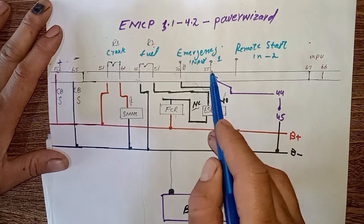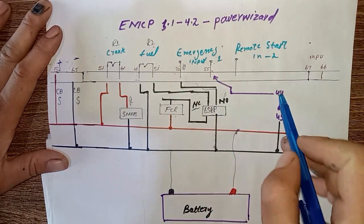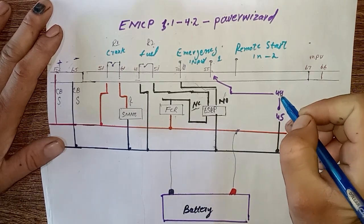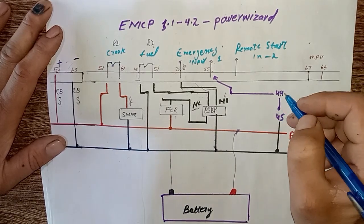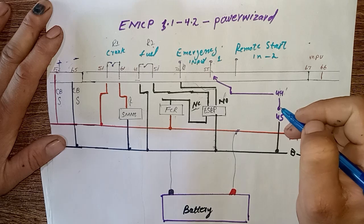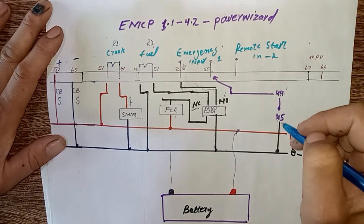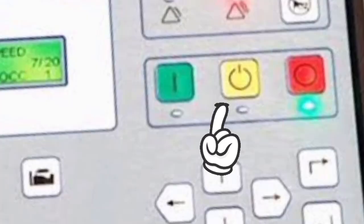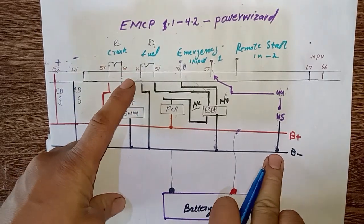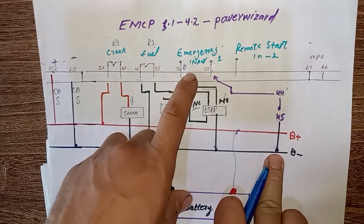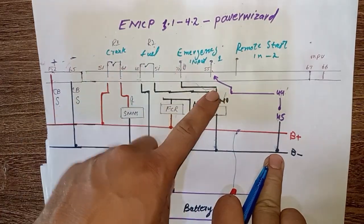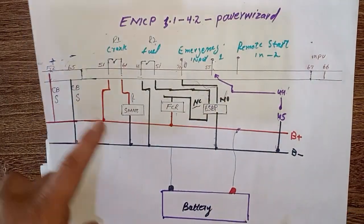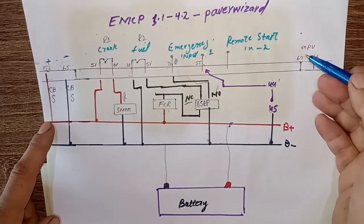After that, you can see pin 55 goes to pin 44. Pin 44 and 45 are normally closed, and this is out from pin 45 and goes to attach with battery negative. When you set auto mode and your main power fails, the controller senses the battery negative and I'm in auto mode, then starts the engine automatically. After that, pin 67 and pin 68 - this is the MPU input, your magnetic pickup unit.